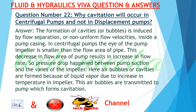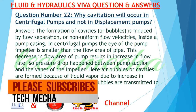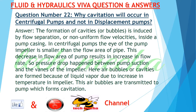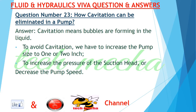Question number 22: Why does cavitation occur in centrifugal pumps and not in displacement pumps? Answer: The formation of cavities or bubbles is induced by flow separation or non-uniform flow velocities inside a pump casing. In centrifugal pumps, the eye of the pump impeller is smaller than the flow area of the pipe. This decrease in flow area results in an increase in flow rate, so a pressure drop occurs between pump suction and the vanes of the impeller. Air bubbles or cavities are formed due to liquid vapor from increased temperature in the impeller, and these are transmitted to the pump, forming cavitation.